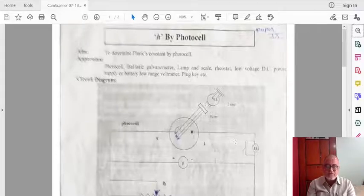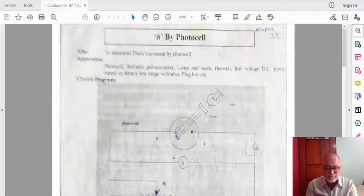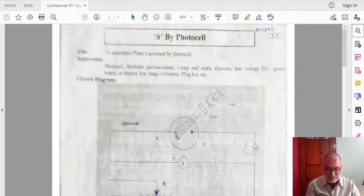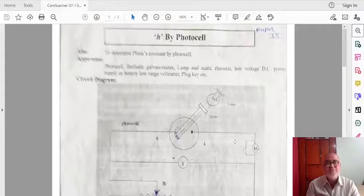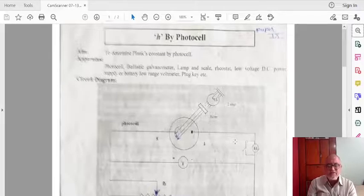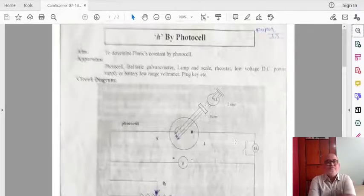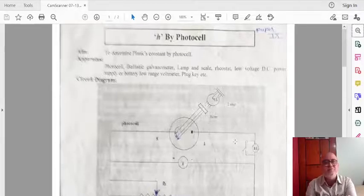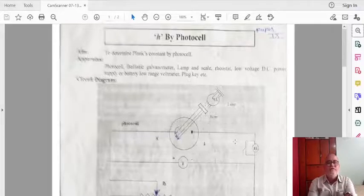For support study, we are giving you the YouTube link for better understanding, and by that link you can see the experiment. See friends, H by photocell. This is the title of the experiment. Aim of the experiment is we are going to determine the Planck's constant by photocell.